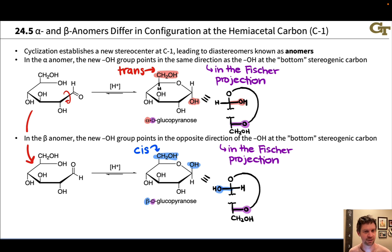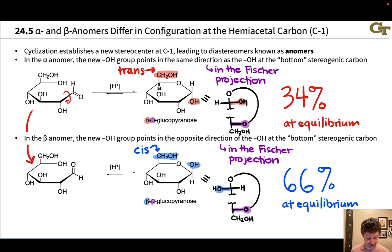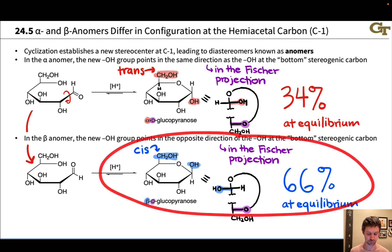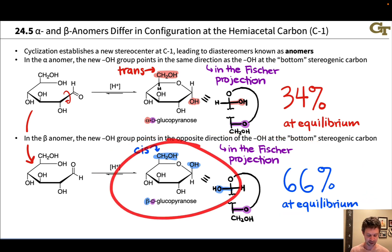Now, these anomers are diastereomers. They differ in configuration, actually only at one carbon. They only differ in configuration right here. So they have different chemical properties and will exist in different amounts at equilibrium in, say, a solution of glucose. And as it turns out, an equilibrium mixture of glucose in solution is about 34% alpha anomer and about 66% beta anomer. You get slightly different numbers depending on which sources you look at here, but basically two-thirds beta anomer is a good benchmark to keep in mind. This is the major anomer. For reasons that will become very clear when we look at three-dimensional structures, particularly the chair structures of alpha and beta D-glucopyranose.